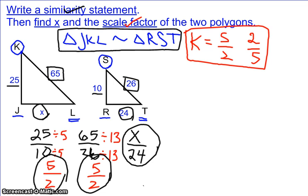So this is actually just going to be a proportion problem where we'll cross multiply. You can take your x over 24 and set it equal to the scale factor of 5 over 2. So it will be a simple cross multiplication problem.